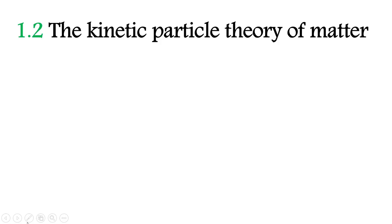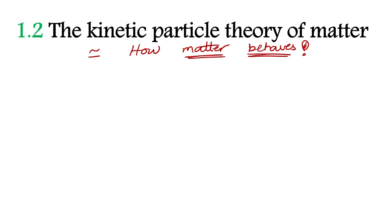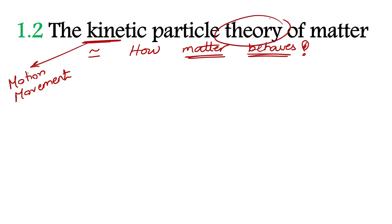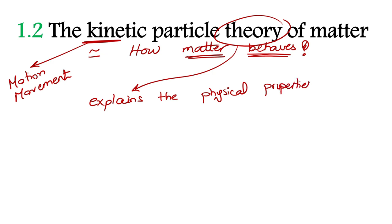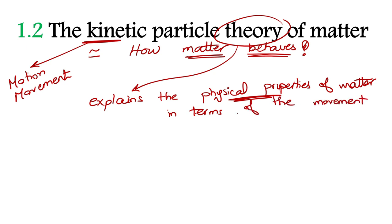The kinetic particle theory of matter explains how matter behaves. The word 'kinetic' means motion or movement. This theory explains the physical properties — the behavior of matter — in terms of the movement of particles.